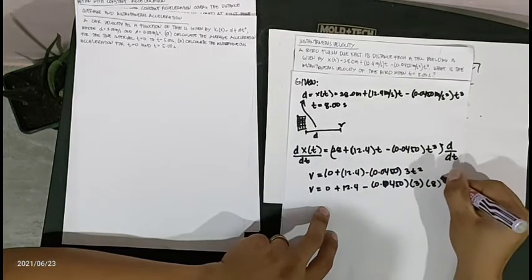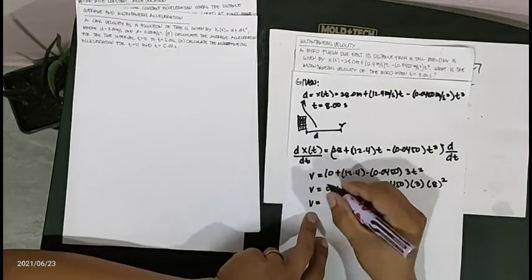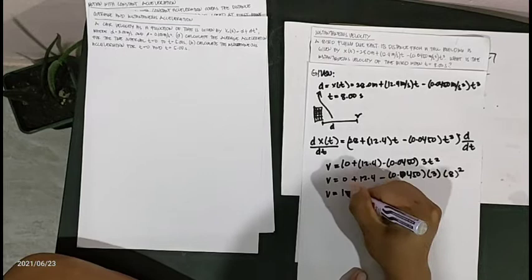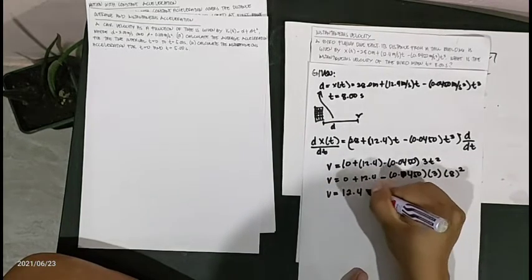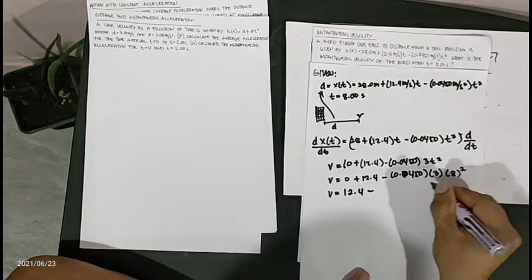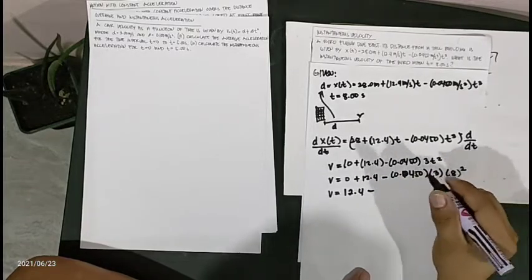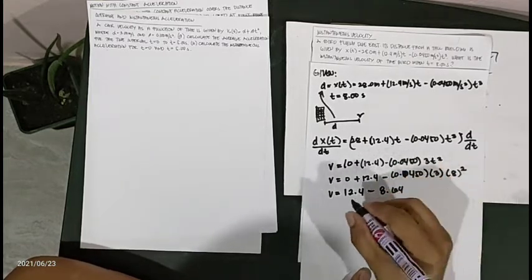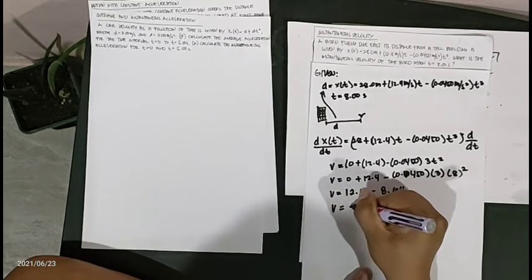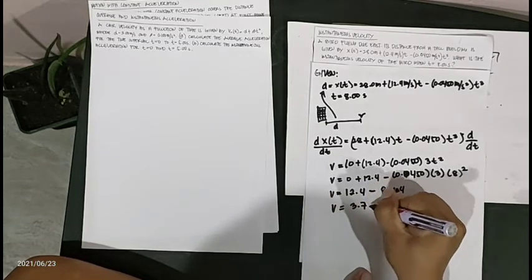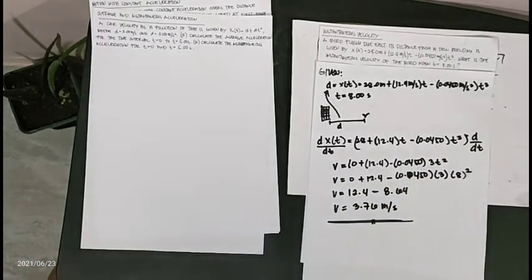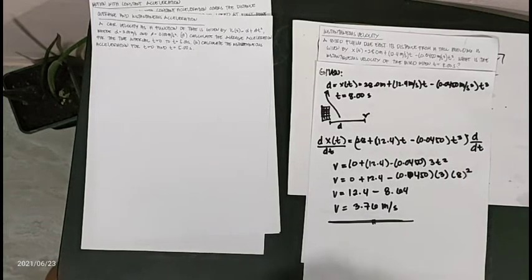Substituting t equals 8 seconds and 8 squared equals 64: velocity equals 12.4 minus the product, which is 8.64. So the velocity is 3.76 meters per second. The velocity of the bird at 8.0 seconds is 3.76 meters per second.